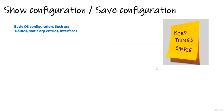The next thing you can do to improve your backup strategy in a Checkpoint environment is use commands like 'show configuration' and 'save configuration' via the command line. The 'show configuration' command includes things like routes, static ARP entries, and interface configuration — simple but useful things. Keep things simple.